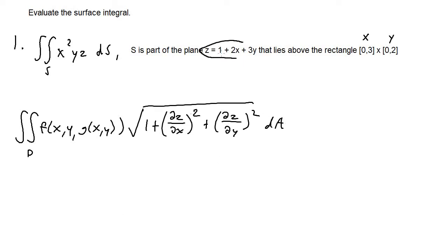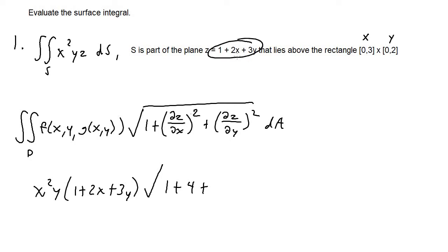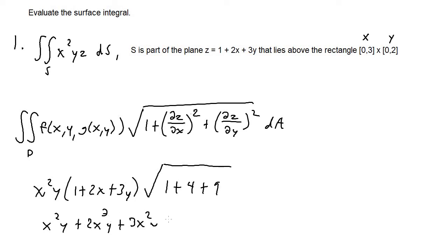We're given z as a function of x and y, so we replace z inside the integral: x² times y times z, which equals 1 + 2x + 3y. We do this because we can't do a double integral with three variables. The partial derivative of z with respect to x is 2, so 2² = 4. The partial derivative of z with respect to y is 3, so 3² = 9. Distributing x²y inside the parentheses gives x²y + 2x³y + 3x²y², and the radical simplifies to the square root of 14.